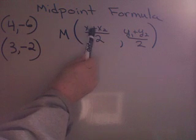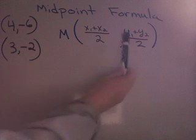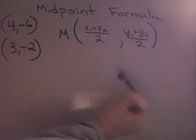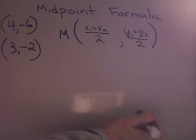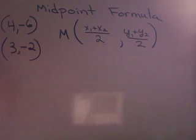x sub 1 plus x sub 2 divided by 2 gives you one point. y sub 1 plus y sub 2 divided by 2 gives you the second point, or the y value in the ordered pair. So, let's see how that works when we have an ordered pair.